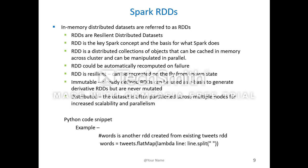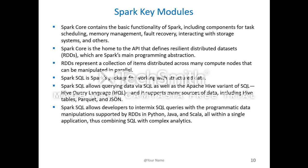Spark Core contains the basic functionality of Spark, including components for task scheduling, memory management, fault recovery, and interacting with storage systems. Spark Core is home to the API that defines the Resilient Distributed Dataset, which is Spark's main programming abstraction. RDD represents a collection of items distributed across many compute nodes that can be manipulated in parallel.